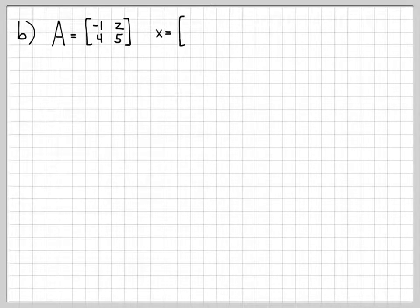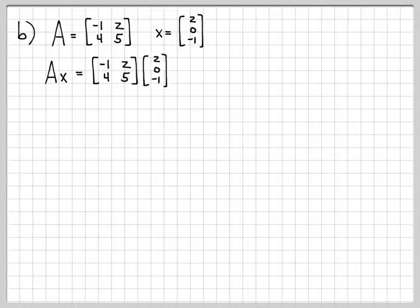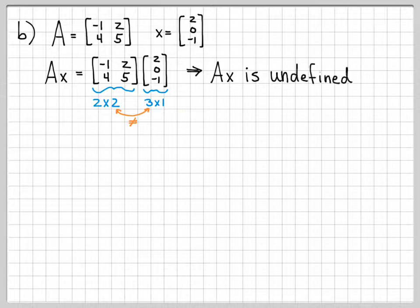Let's do another example. In part B, we're going to choose a different A, a different X, and again we're going to try to compute the quantity Ax. The first thing I need to do is check and make sure that this is a well-defined quantity. I look at the matrix A. It's a 2 by 2 matrix. It has two rows, two columns. And I look at the vector X, and it has three rows and one column. I look at the inner dimensions. The number of columns of A is 2. The number of rows of X is 3. 2 is not equal to 3, so I cannot do this matrix-vector multiplication.